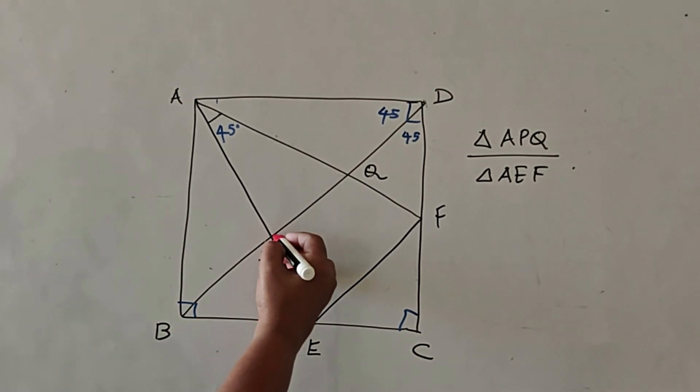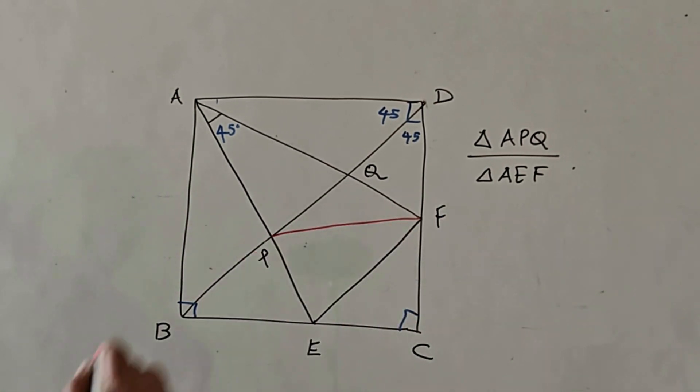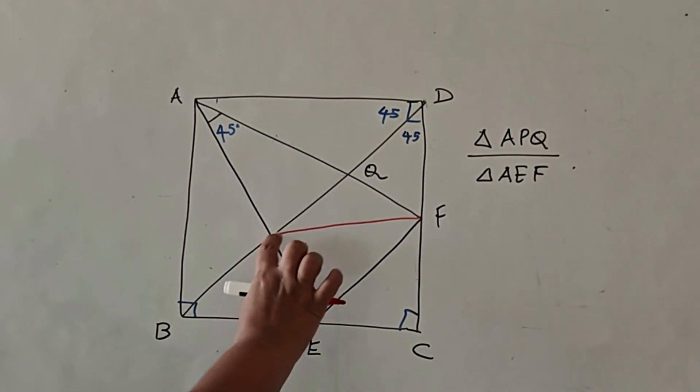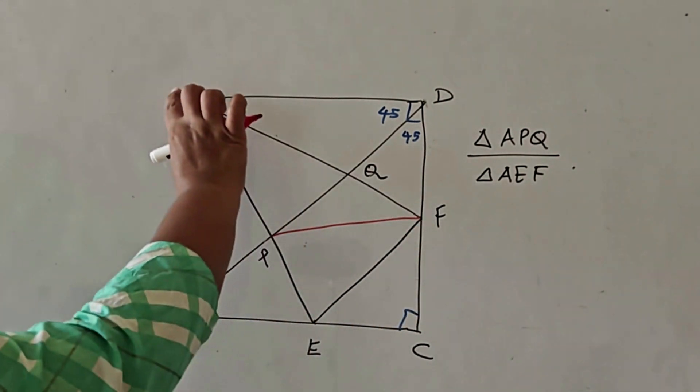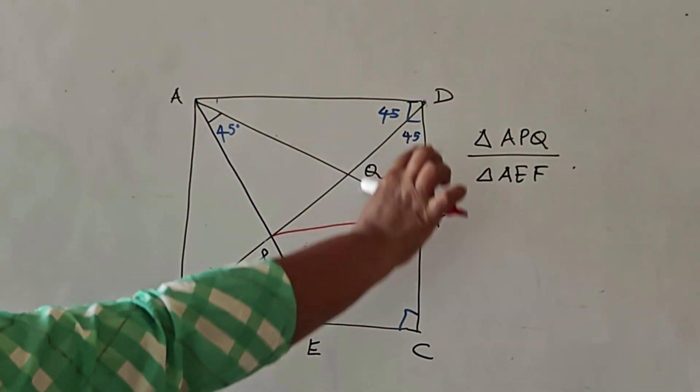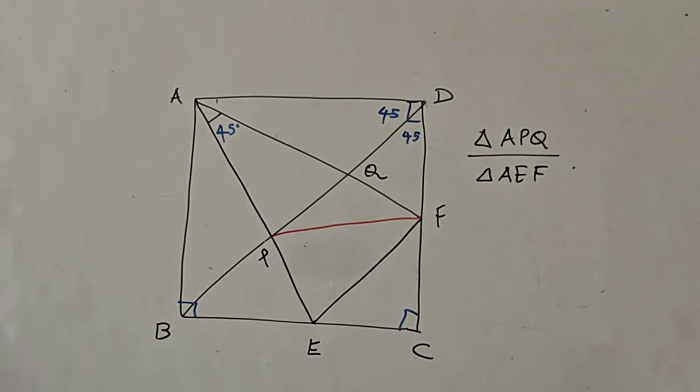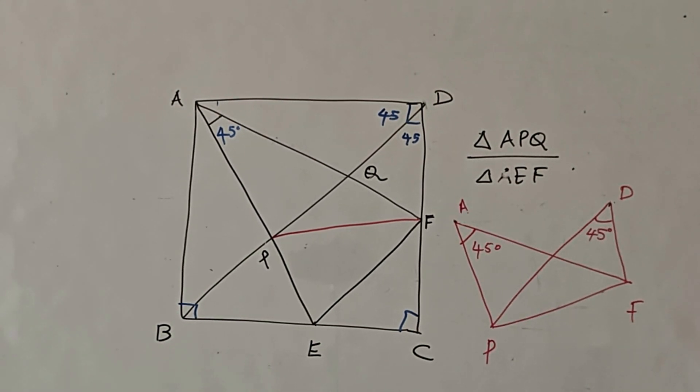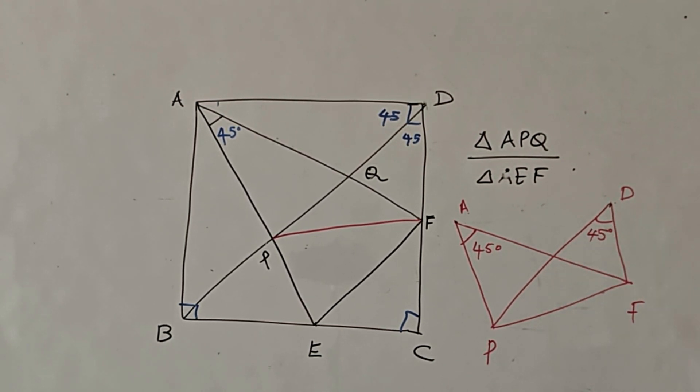If I join P and F, you can see that the angles subtended by the line segment PF at A and at D both are equal to 45. So I have separately drawn A, P, F and D so you can see both the angles are 45 degrees. So you can say that A, P, F and D are concyclic points.